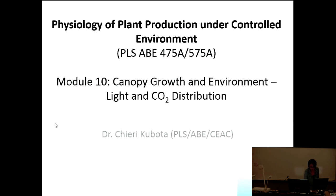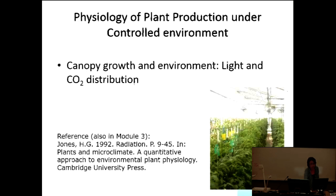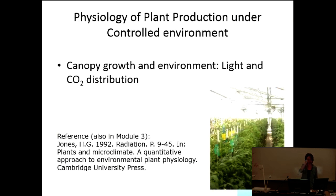So today is sort of radiation in the canopy — you're going to learn that today. So canopy growth and environment: light and CO2 distribution. And then one more canopy talk on Wednesday, and then Monday is actual measurement to understand the canopy microenvironment. One reading material — this is actually optional — exactly the same as the one for graduate students for the week of light intensity and light quality. If you're an undergraduate student, go through and find some of the things covered in lecture. It's not a requirement.